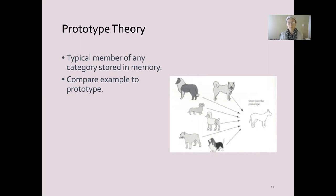So if my prototype of a bird is something like a robin, if I see an ostrich, I'm going to have a harder time learning as a child that that belongs to the same bird category because it's so different from my prototype.